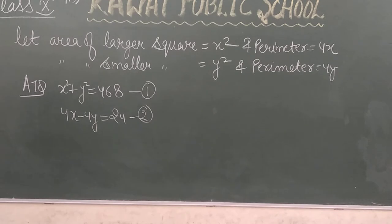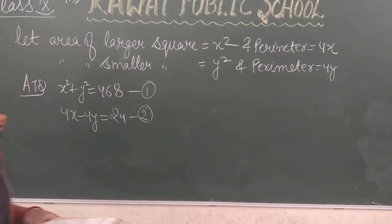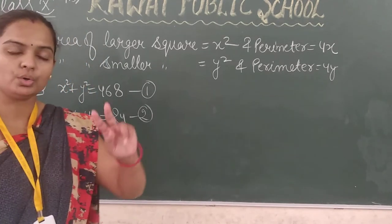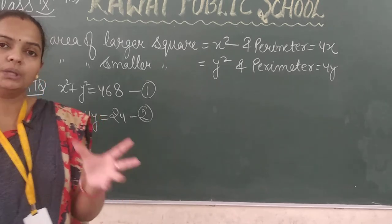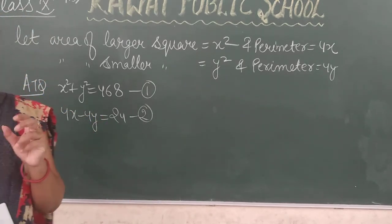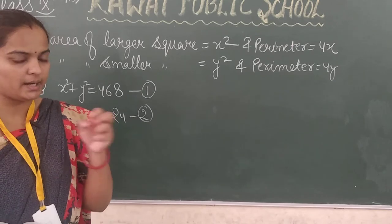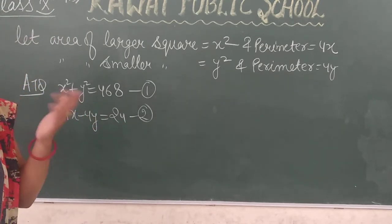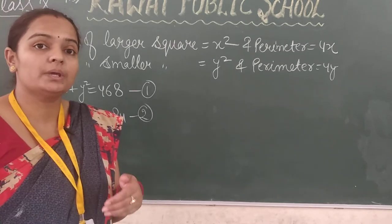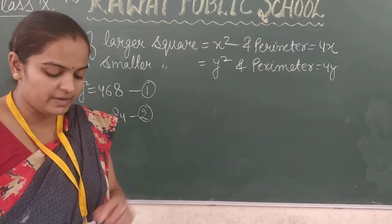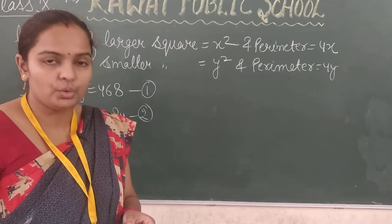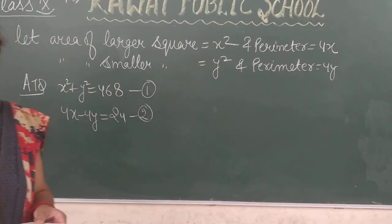Now let's take question number 11. The sum of areas of 2 squares is 468 square meters. If the difference of their perimeters is 24 meters, find the sides of the 2 squares.